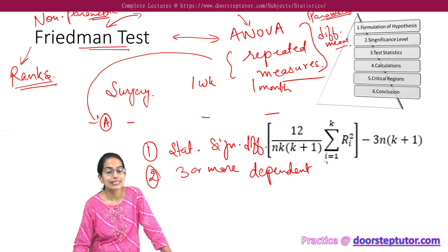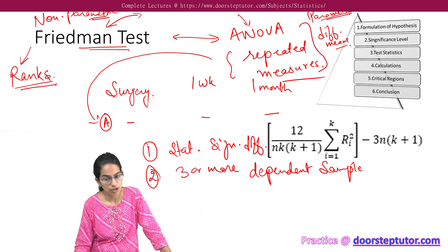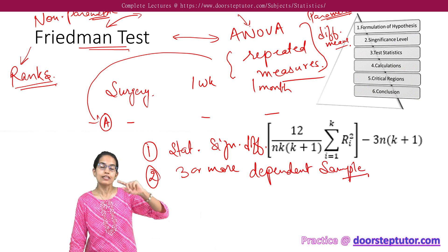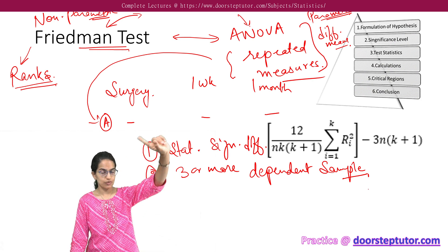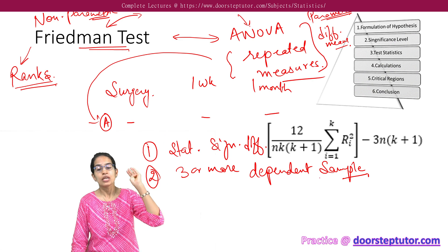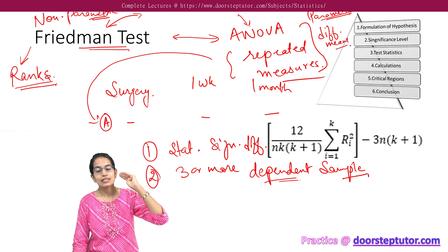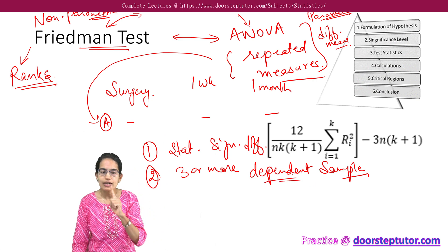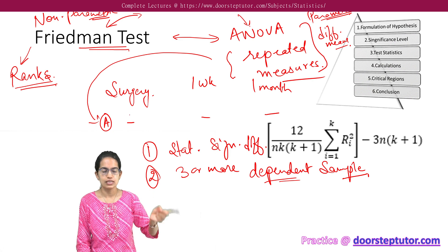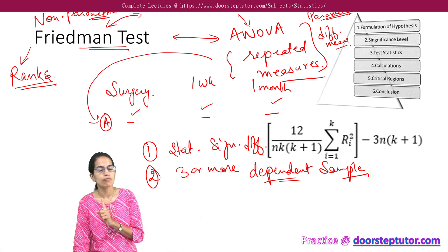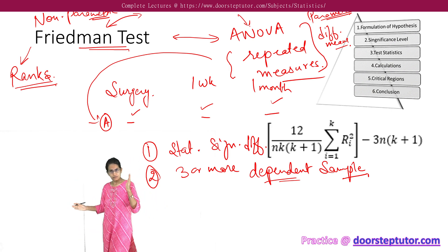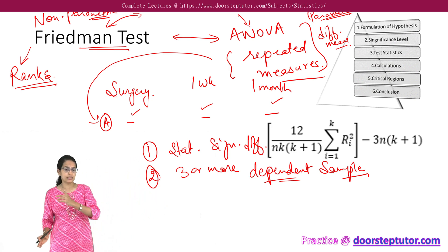Now, when it is an independent sample, three or more independent samples in a non-parametric test, we could do Kruskal-Wallis test as we have understood in a separate lecture. However, when the samples are dependent, how are they dependent? Same person's values I am taking at the time of surgery, one week after surgery, one month after surgery. So it is dependent, it's on the same person.